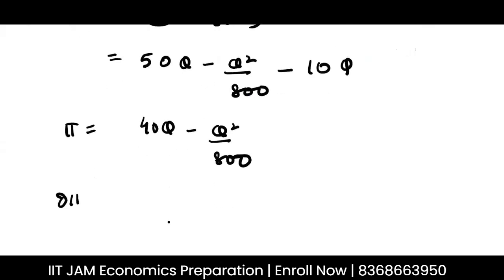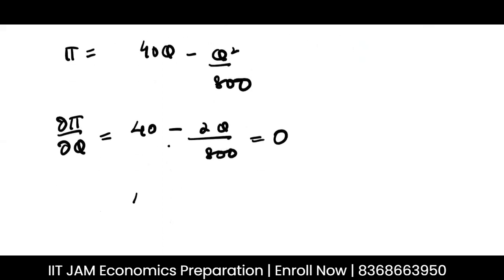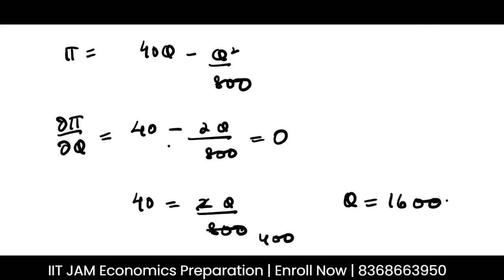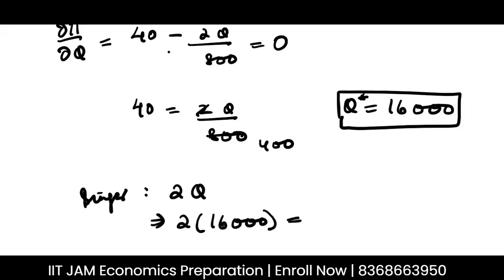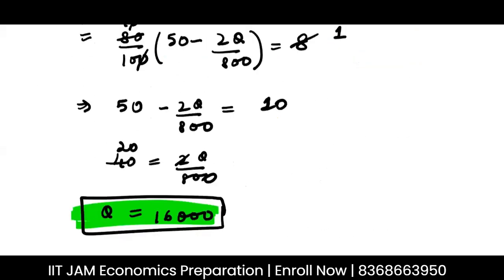Maximizing profit: dπ/dQ = 40 − 2Q/800 = 0, so 40 = 2Q/800, giving Q = 16,000. The singer gets ₹2 per unit, which is 2 × 16,000 = ₹32,000. So in the second case, the singer is getting ₹32,000.